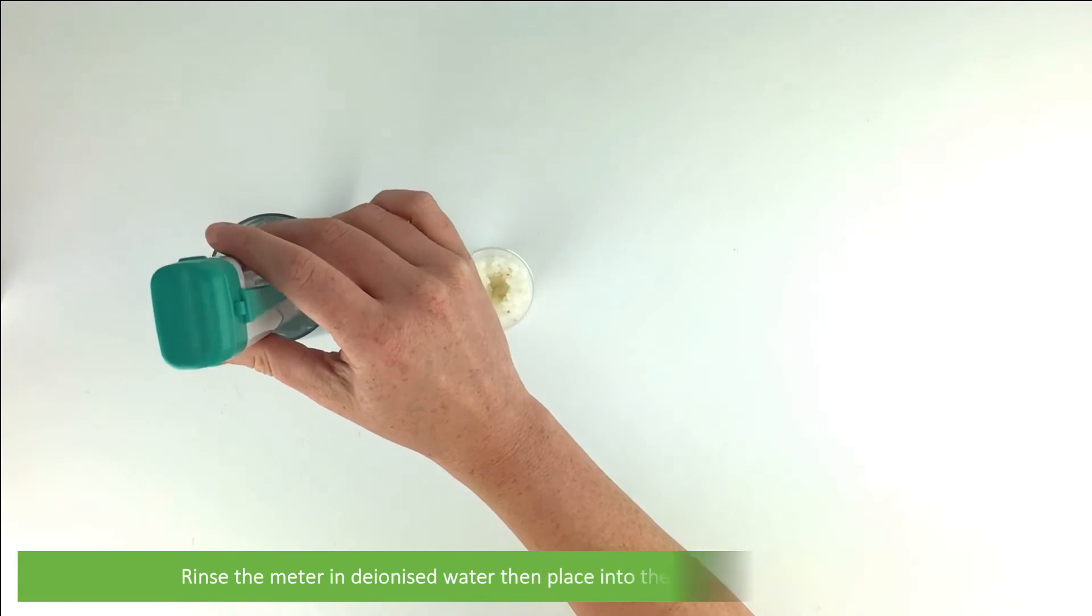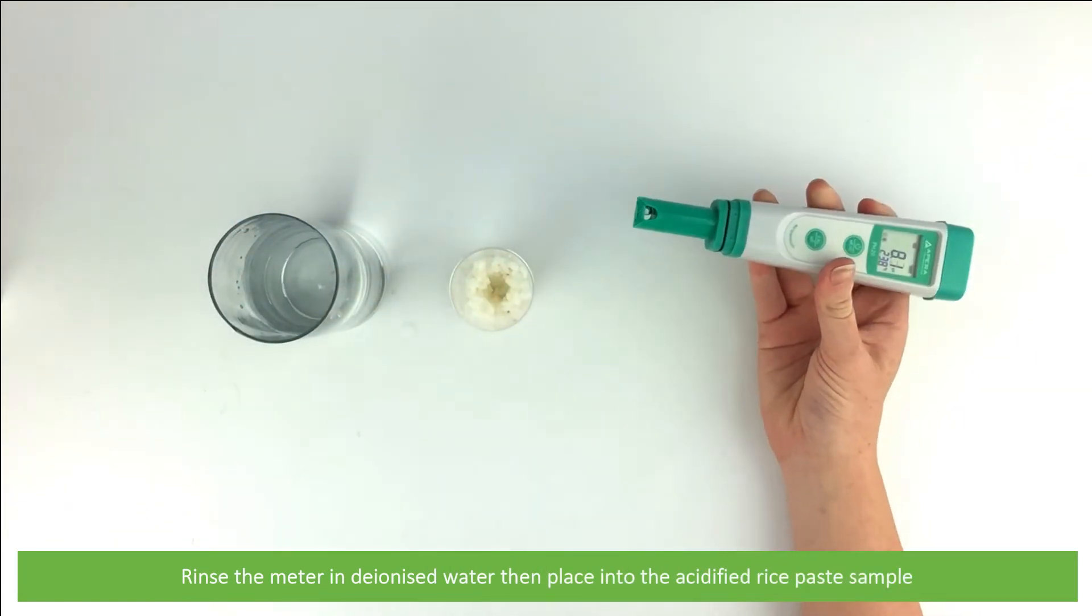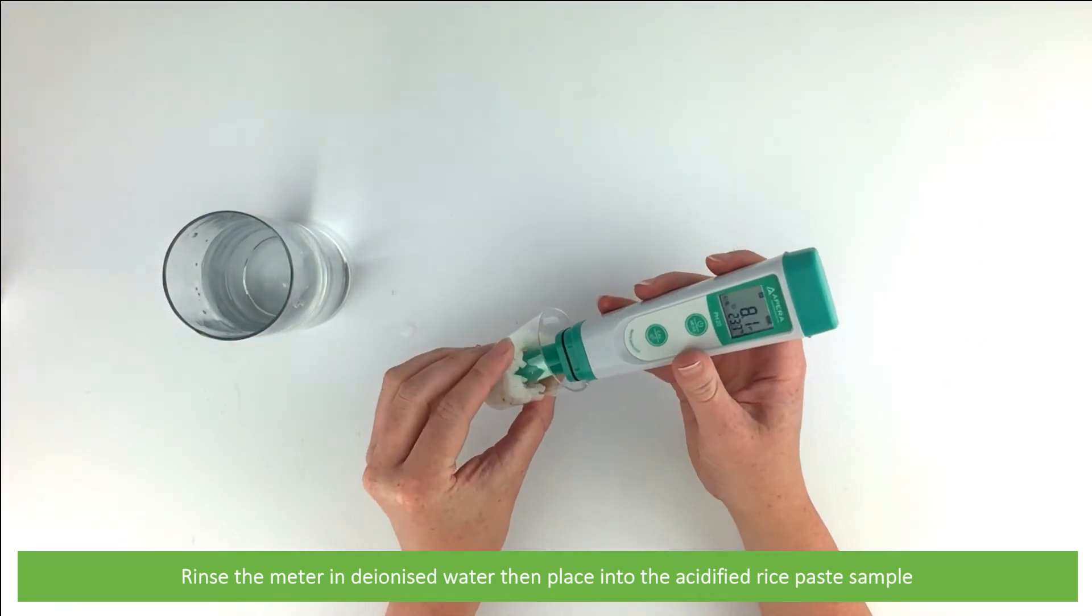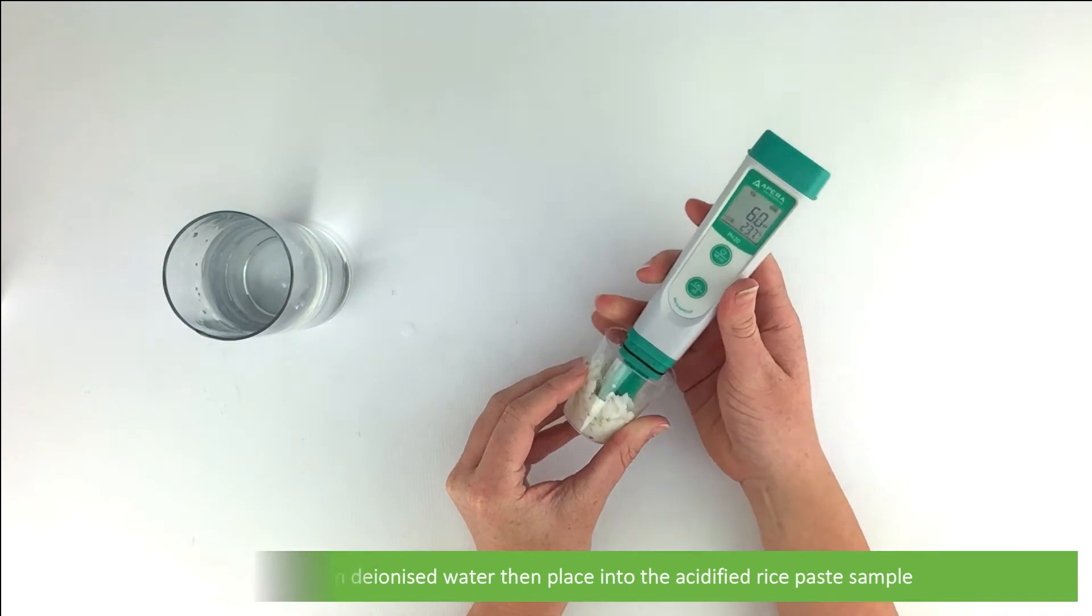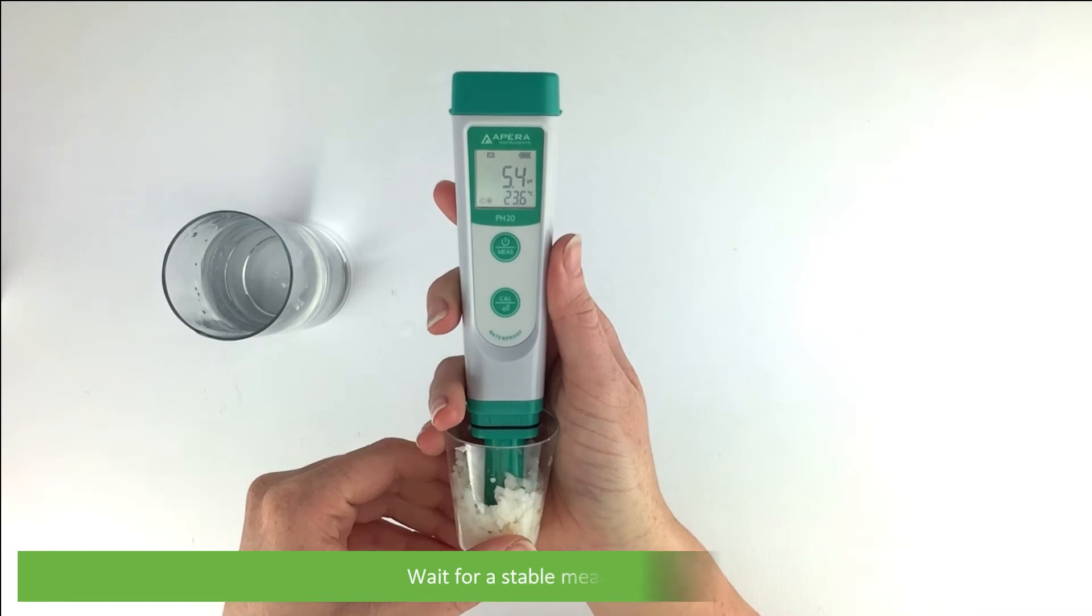Rinse the electrode in deionized water, then place into the acidified rice paste sample. Wait for a stable measurement.